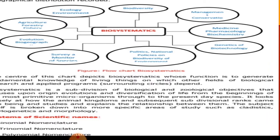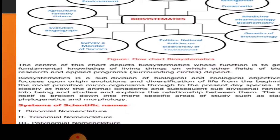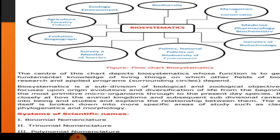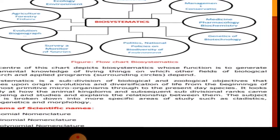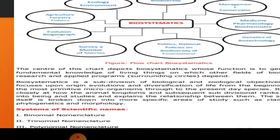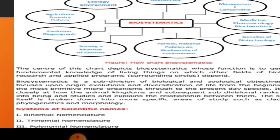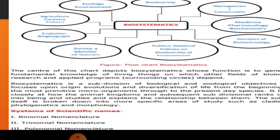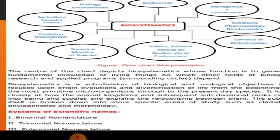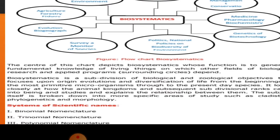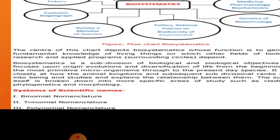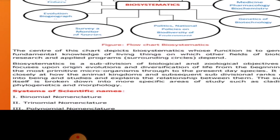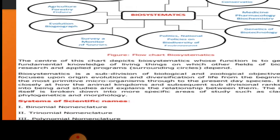The subject itself is brought down into more specific areas such as cladistics, phylogenetics, and morphology. So biosystematics is the most important part of the system of scientific names.